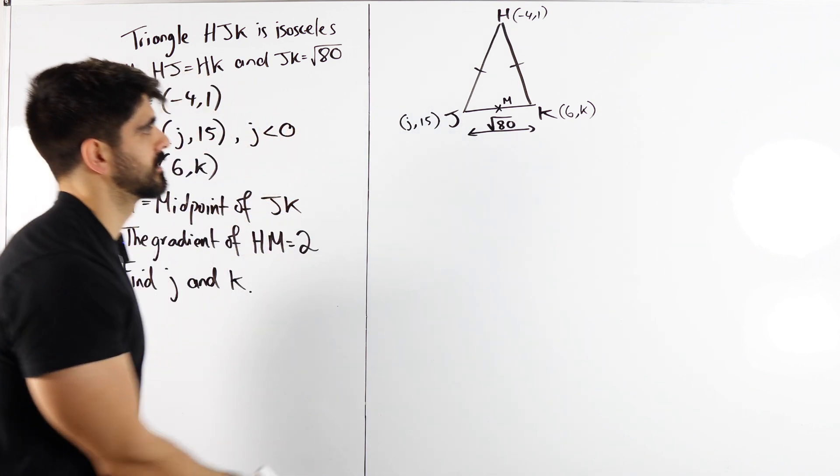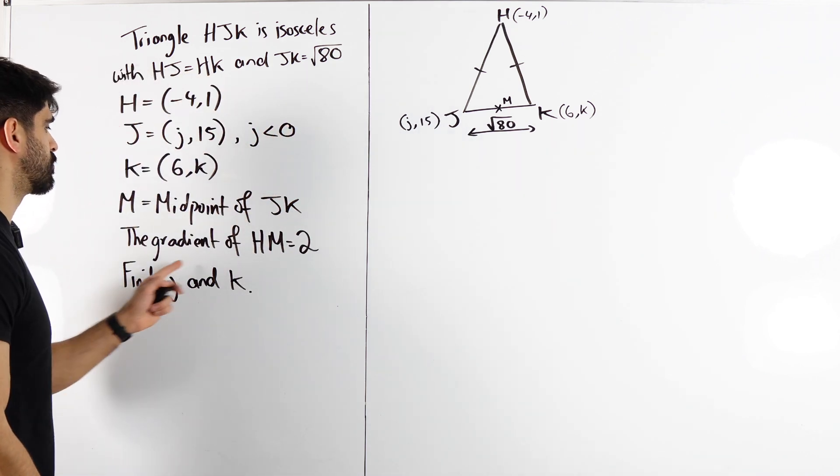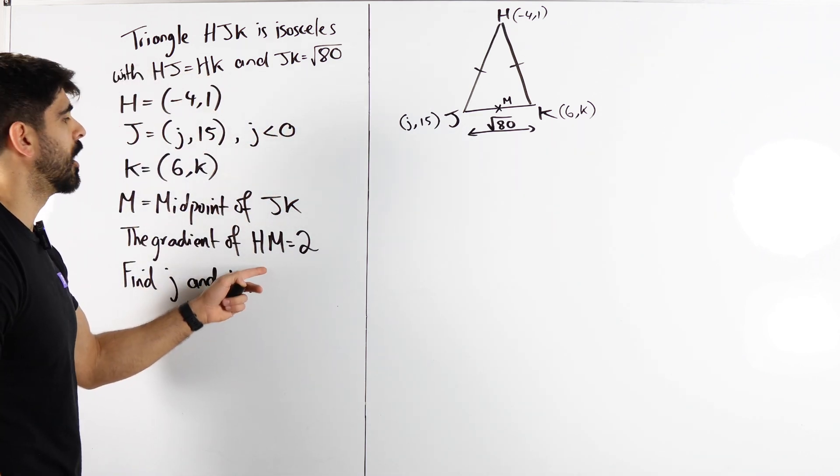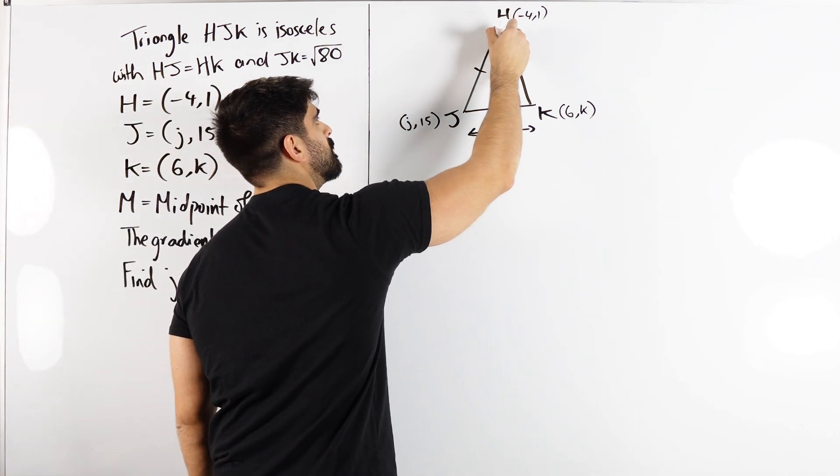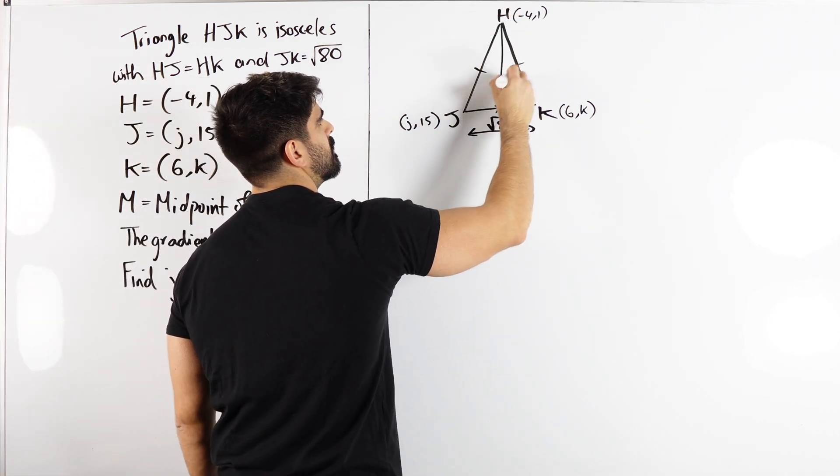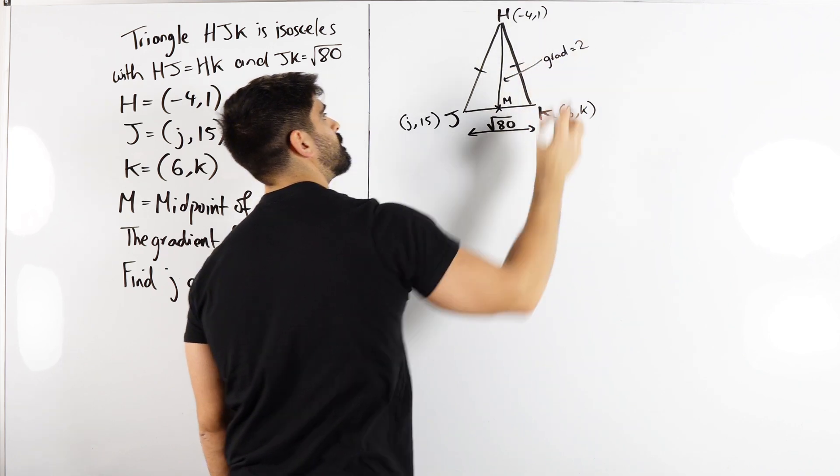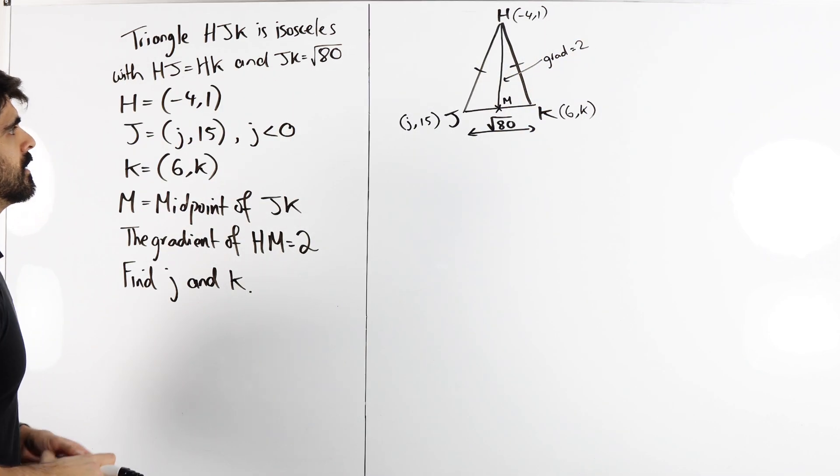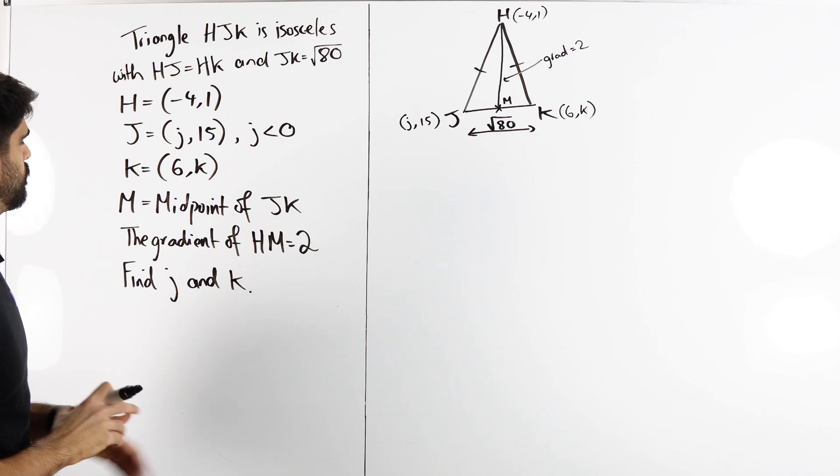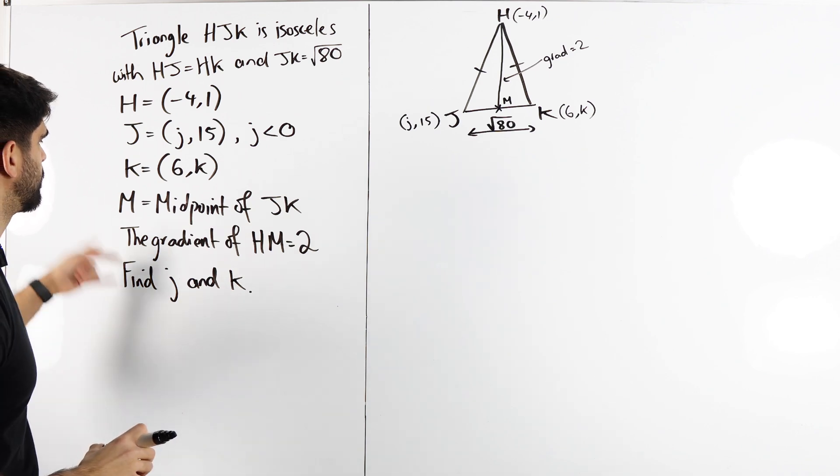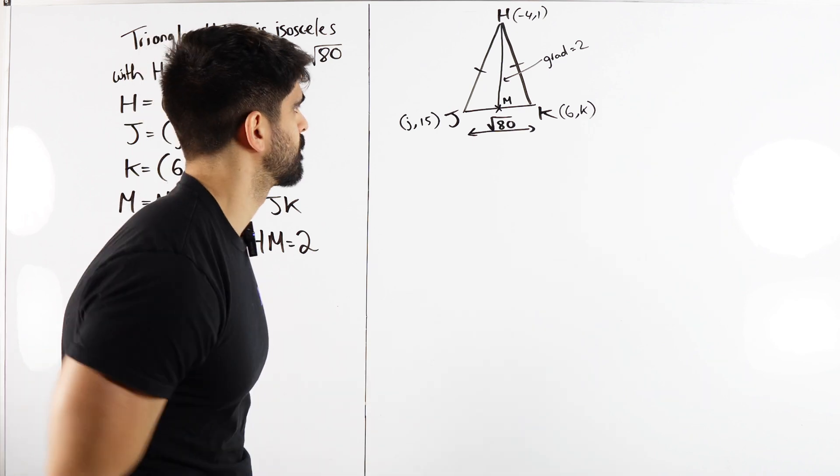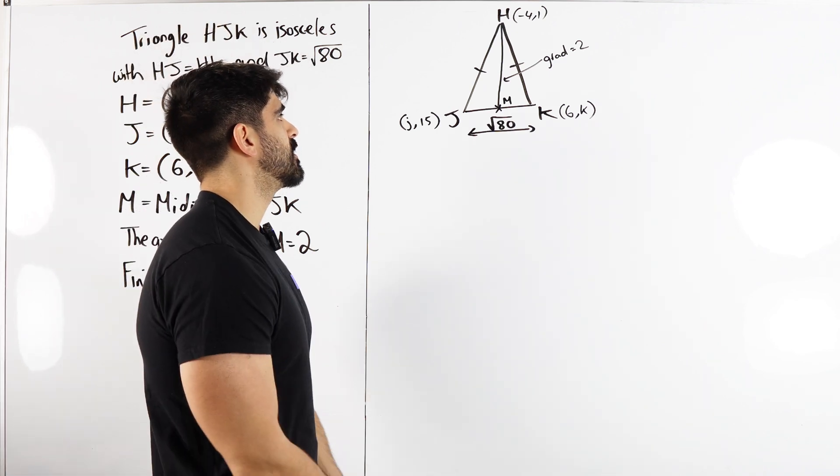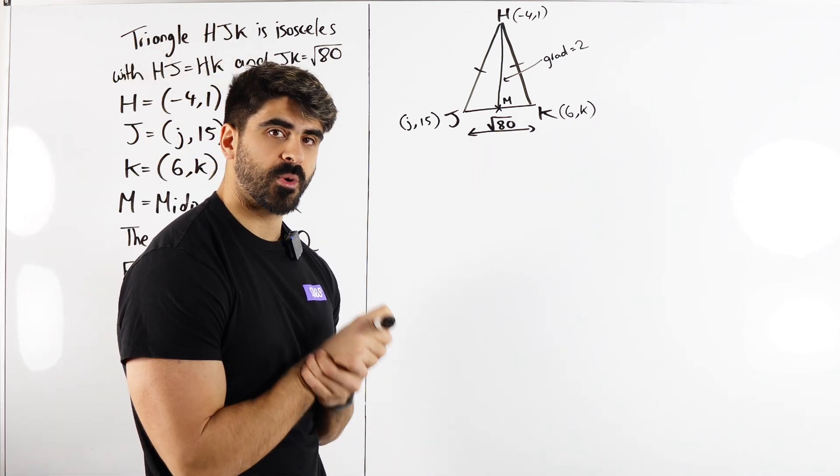I guess it's relevant somehow. The gradient of HM is 2. I see. We have two unknowns and we're given two pieces of information, simultaneous equations. Nice. Where are we going to form our two equations?